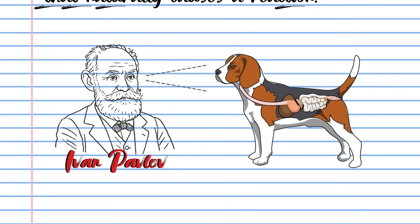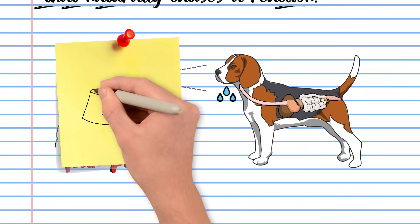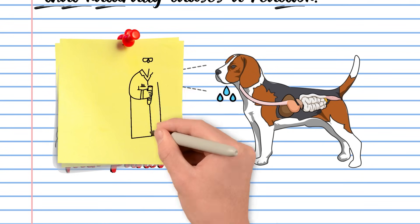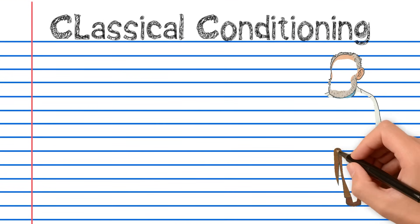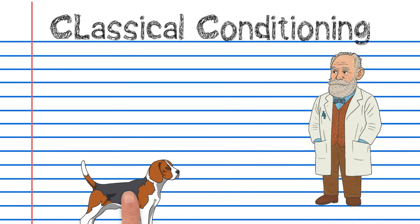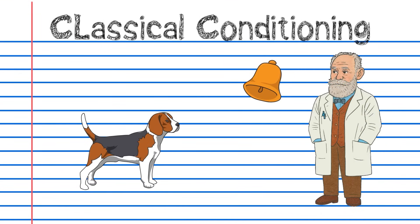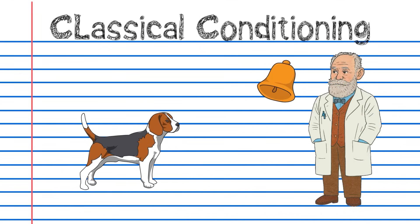Pavlov was studying digestion when he noticed something odd: dogs began to salivate not just when food arrived, but when they saw the lab assistant or heard their footsteps. So Pavlov ran an experiment — he rang a bell, then gave the dog food.